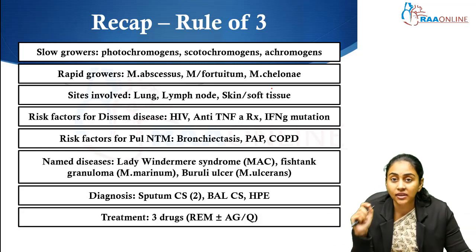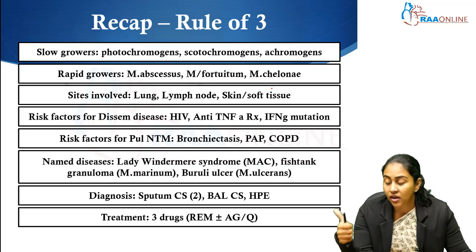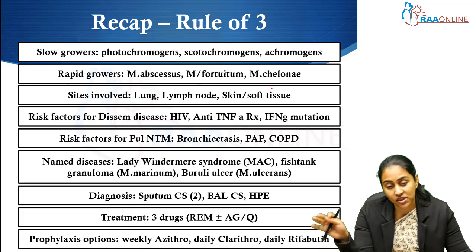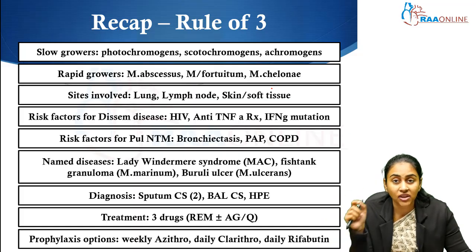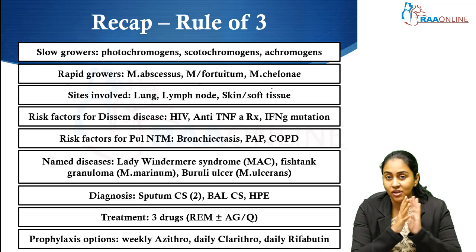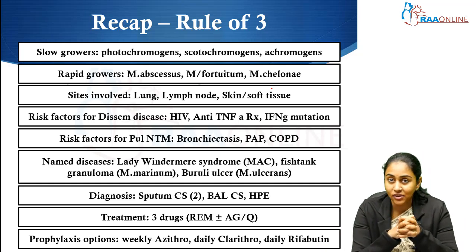Three important drugs in NTM management — remember REM: Rifampicin, Ethambutol, and Macrolide. Macrolide is a very important drug for most non-tuberculous mycobacteria. Second-line agents include aminoglycoside and fluoroquinolone. Three important prophylactic options in patients with advanced HIV when CD4 is less than 50: weekly azithromycin, daily clarithromycin, and daily rifabutin. With this we've come to the end of this session on non-tuberculous mycobacterial infections. Thank you. This is Dr. Aditi for RA Online.